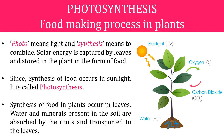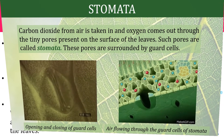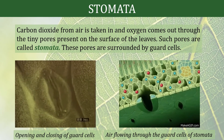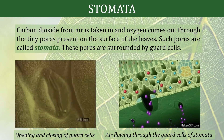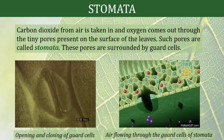Water and minerals present in the soil are absorbed by the roots and transported to the leaves. Carbon dioxide from air is taken in, and oxygen comes out through tiny pores present on the surface of the leaves. Such pores are called stomata, and these pores are surrounded by guard cells.